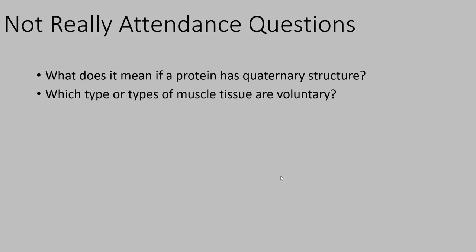First: what does it mean if a protein has quaternary structure? And next: what type or types of muscle tissue are voluntary? Go ahead and pause the video, try to answer those questions, and then check your answers.